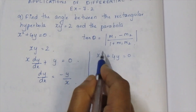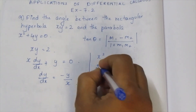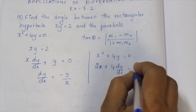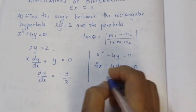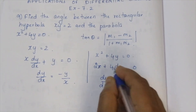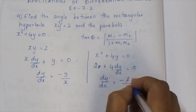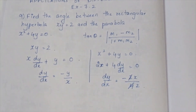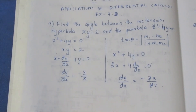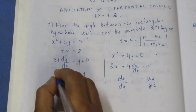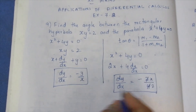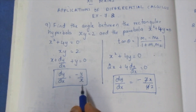After differentiating and simplifying, we get dy/dx = -y/x for the hyperbola. For the parabola, dy/dx = x/2.